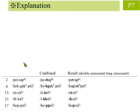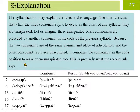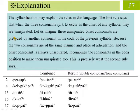Here we further explain why the three sounds become unaspirated when they are followed by another consonant of the same manner and place of articulation. Previously, we mentioned that when the three consonants P, T, and K occur as the onset of a syllable, they are unaspirated. Let us imagine that the unaspirated onset consonants are preceded by another consonant in the coda of the previous syllable. Because the two consonants are of the same manner and place of articulation, and the onset consonant is always unaspirated, it combines with the consonant in the coda position to make them unaspirated too.